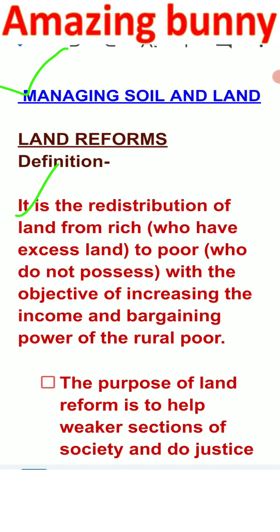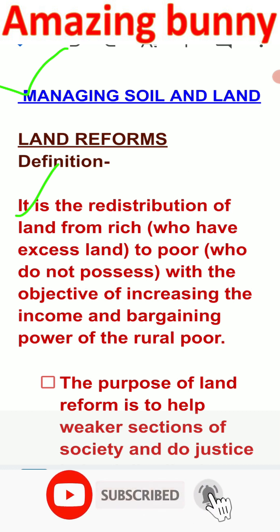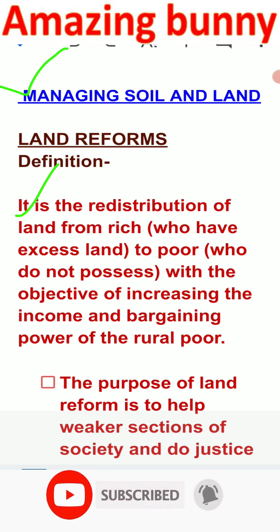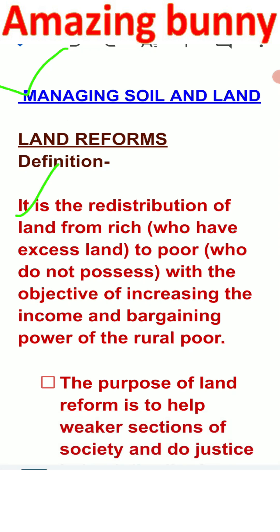With this idea in mind, land reform is defined as the redistribution of land from rich to poor. Rich people are those who have excess, extra land not used for anything, and poor are those who don't have any land. The main objective is that income and production should be increased and rural people can be uplifted. The purpose of land reform is to help the weaker section of society by doing justice to land distribution.